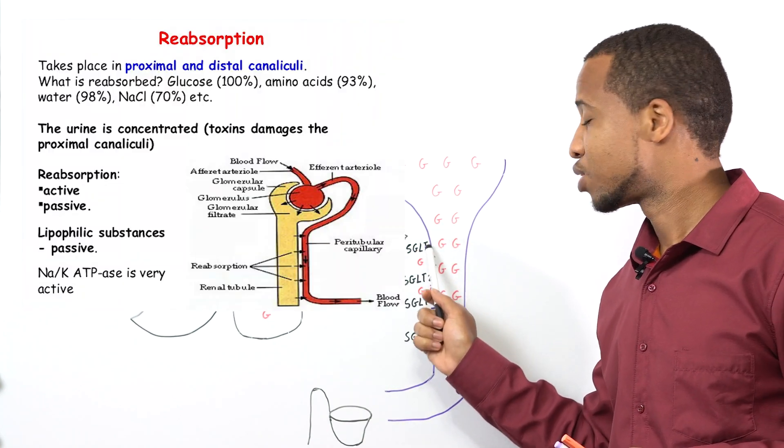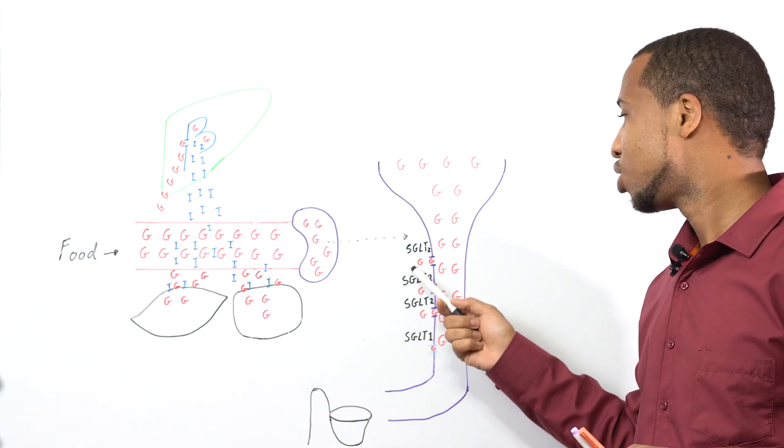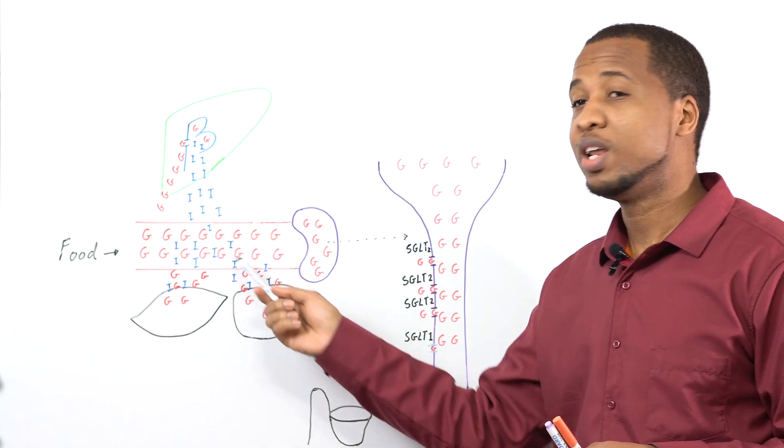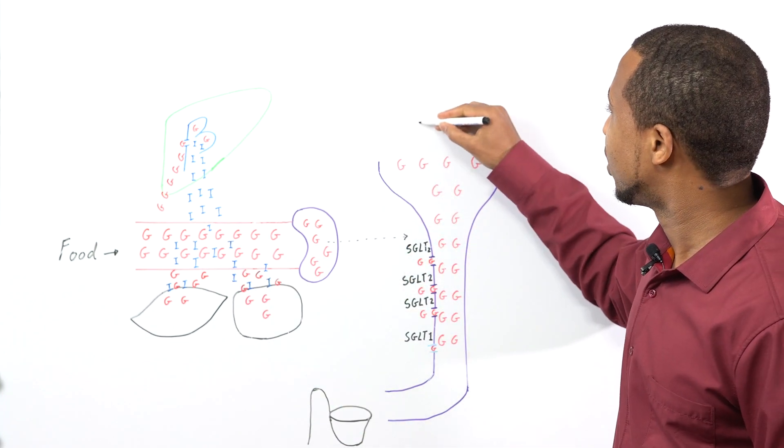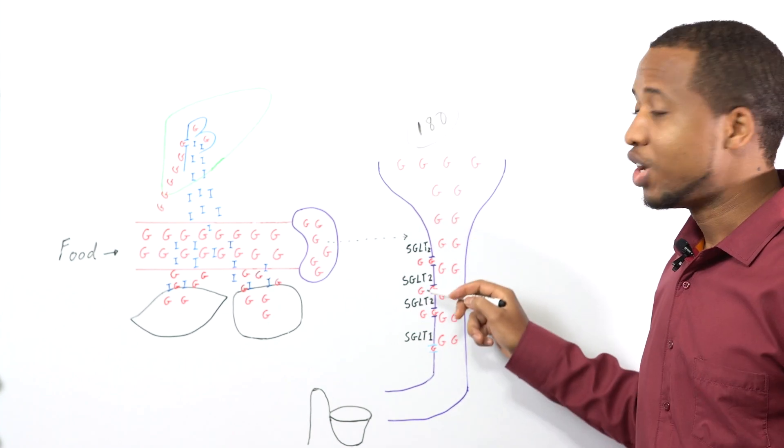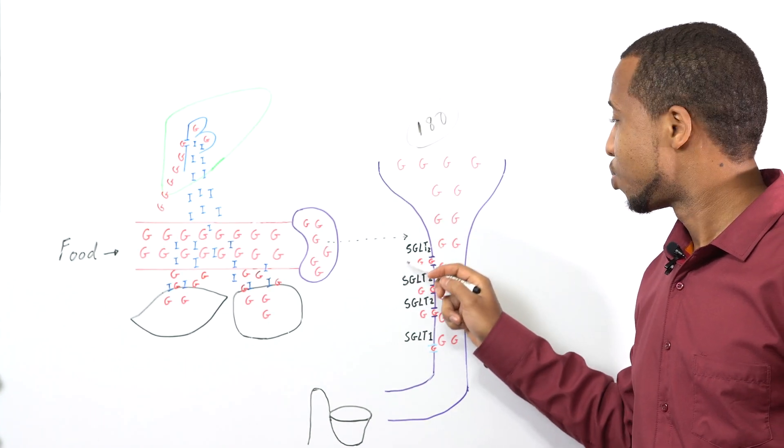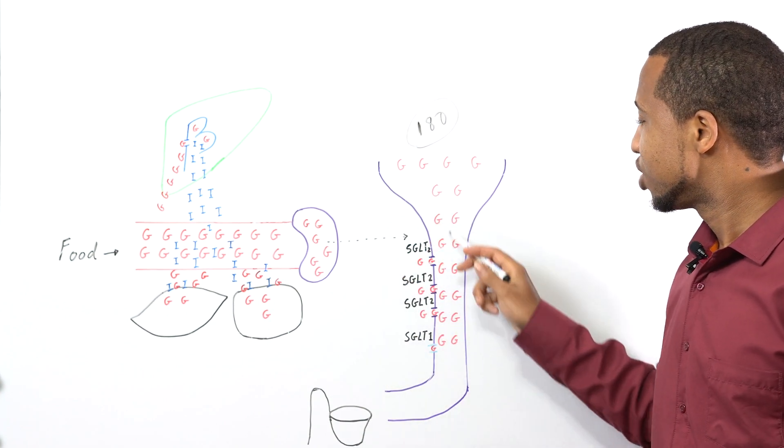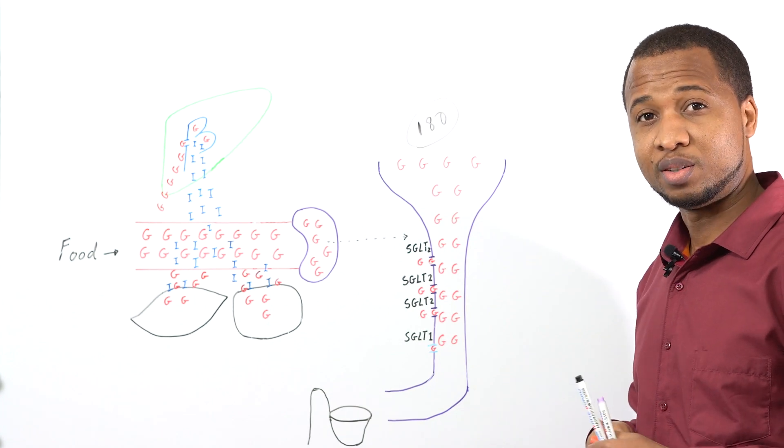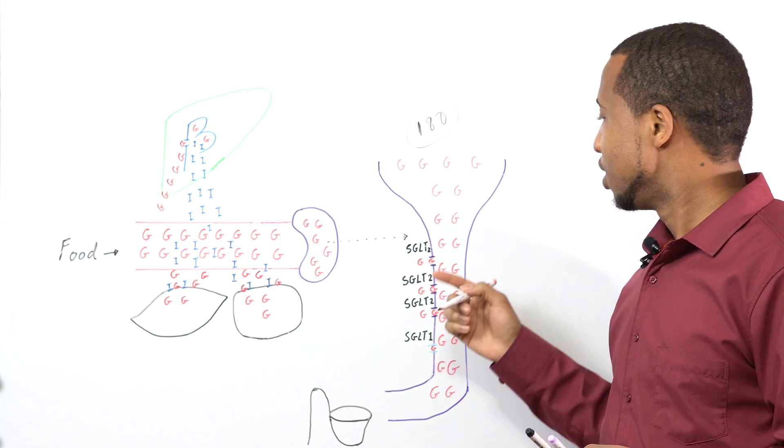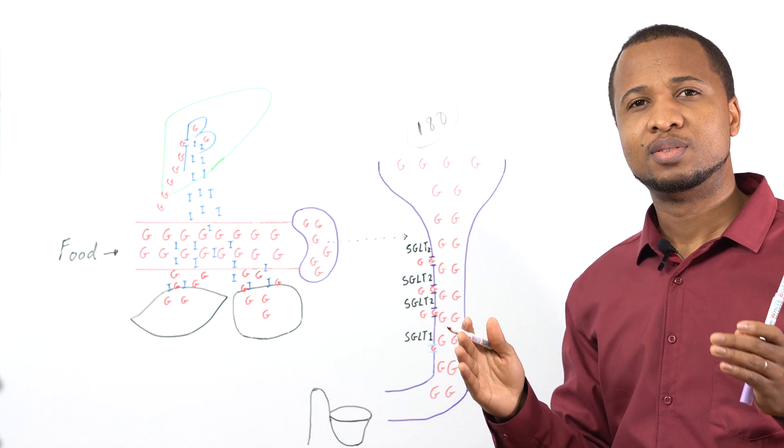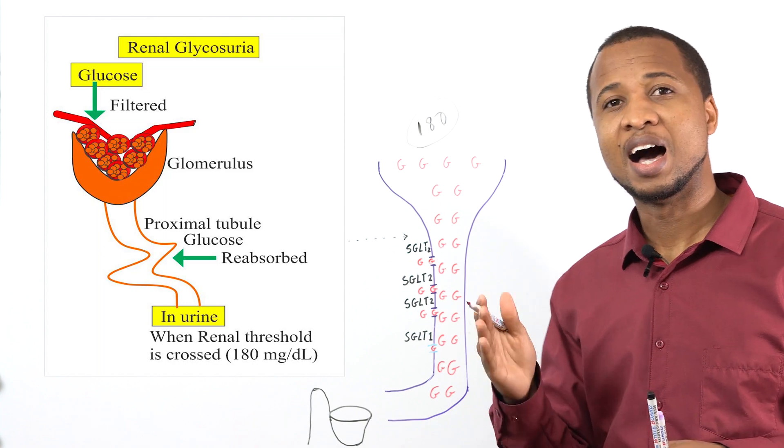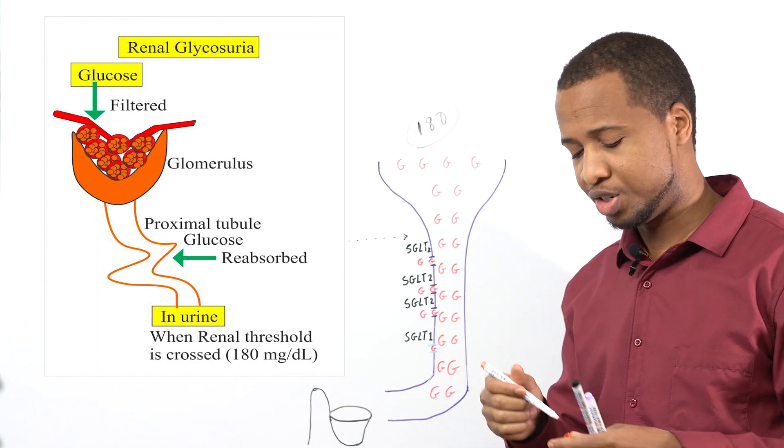Every time you pass here, these transporters will take them back. They're called sodium glucose linked transporters or co-transporters. However, if your blood sugar is really high, more than 180, there are not enough transporters to take all of them back to your body, so some of these glucose will be going to the urine. So when you have sugar in your urine, your blood sugar is definitely high unless you have some other conditions.